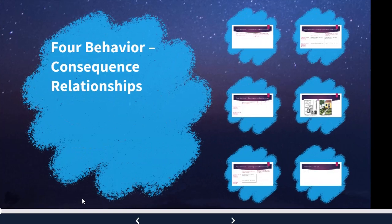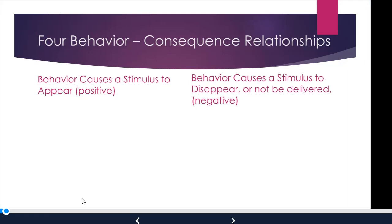There are four behavior-consequence relationships. The behavior can cause a stimulus to appear in the environment — that's a positive relationship, like a positive correlation. It doesn't mean it's positive from the animal's perspective; it just means behavior is causing something to appear. The other relationship is the behavior could cause the stimulus to disappear — a negative relationship between behavior and stimulus. Again, it doesn't mean positive or negative with respect to the animal or person.